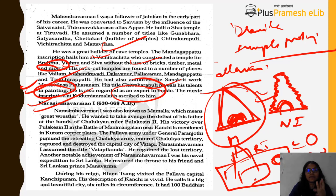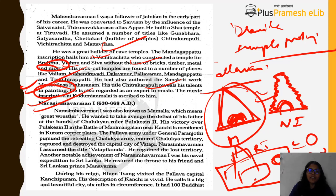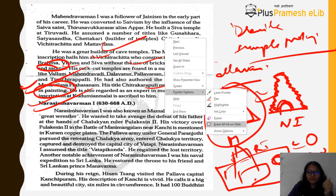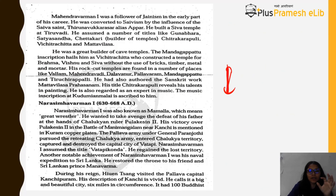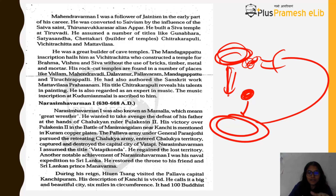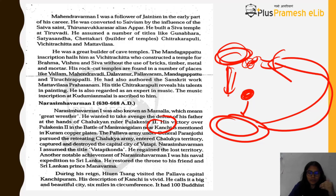The second great ruler of the third line was Narasimha Varman I, ruling from 630 to around 668 AD. He was also known as Mamalla, meaning 'great wrestler.' We know from the Pallava–Chalukya conflict that Pulakeshin II had defeated Mahindra Varman. Narasimha Varman I, as the son, wanted to avenge his father's defeat. His victory over Pulakeshin II in the battle of Mani Mangalam near Kanchi is mentioned in the Kurram Copper Plates.